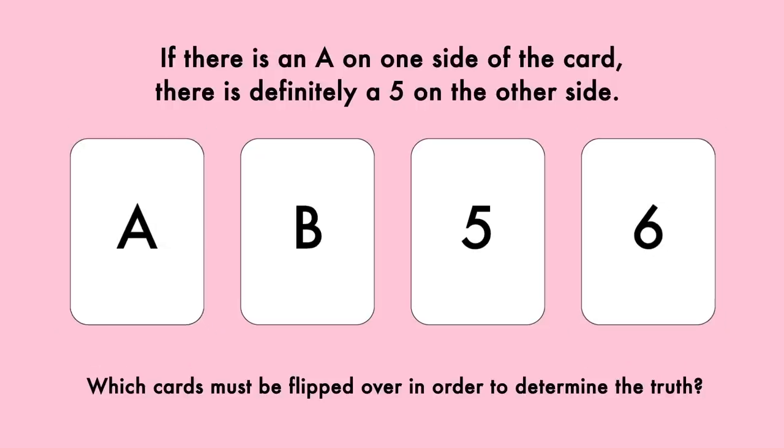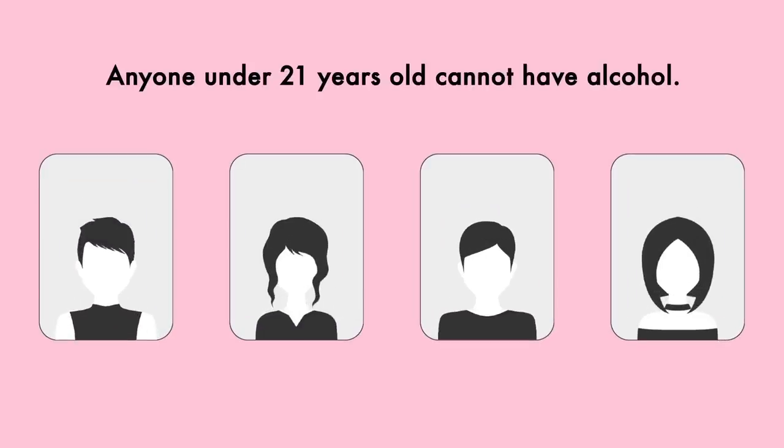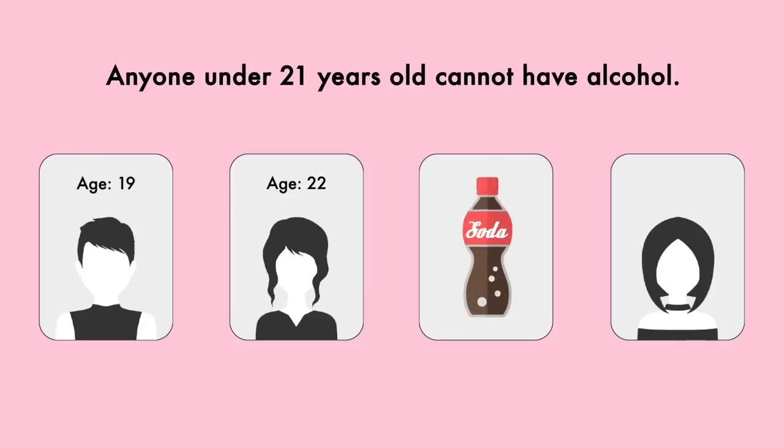You may see the reasoning, but let me ask another quick question first. Let's say that we're at a bar in the United States where they say anyone under 21 years old cannot have alcohol. Imagine there are 4 people at the bar all drinking something. The only information you have is that person 1 is 19 years old, person 2 is 22 years old, person 3 is drinking a soda, and person 4 is having a beer.